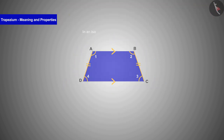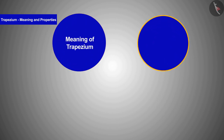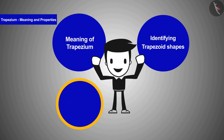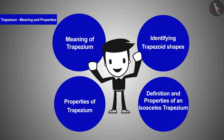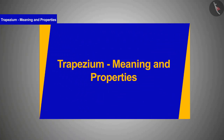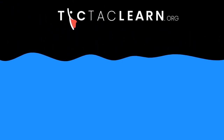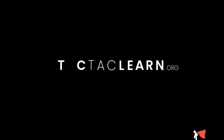Today in this video, we have learnt the meaning of trapezium, identifying trapezoid shapes, properties of trapezium, and the definition and properties of isosceles trapezium. In the next video, we will see some examples based on these. We'll see you in the next video.